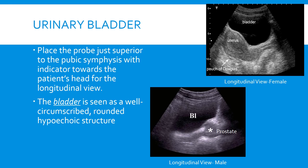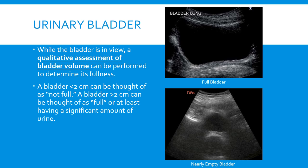To find the bladder, we place the probe just superior to the pubic symphysis with the indicator pointing towards the patient's head, giving us a longitudinal view. The bladder is seen as a well-circumscribed, rounded hypoechoic structure. You'll see the difference between male and female views in the pictures on the right — in a female you'll see the uterus just posterior to the bladder, and in a male you'll see the prostate just posterior to the bladder. We can do a qualitative assessment of bladder volume: less than two centimeters indicates not full, and greater than two centimeters indicates the bladder is full or has a significant amount of urine.